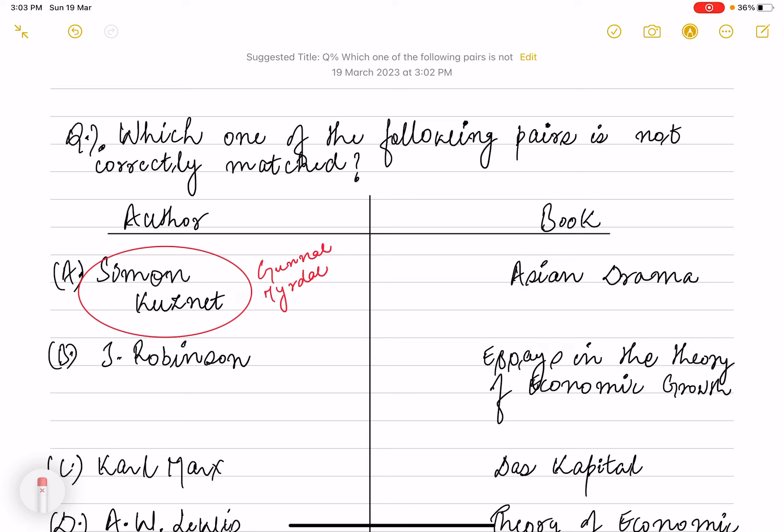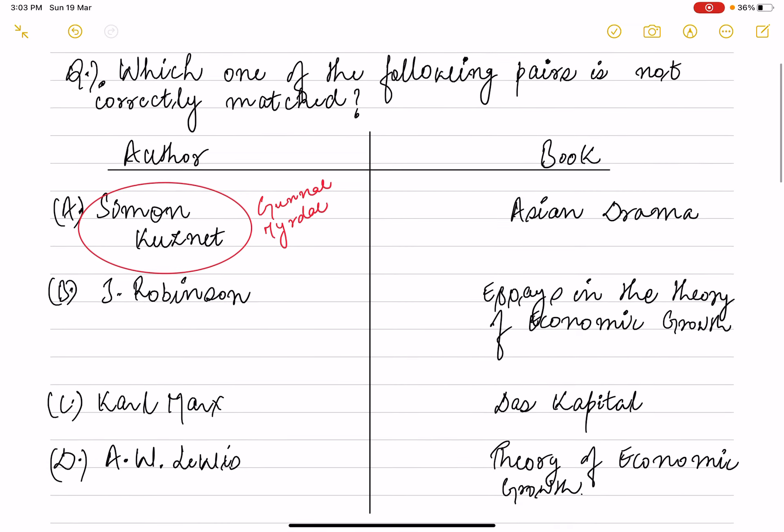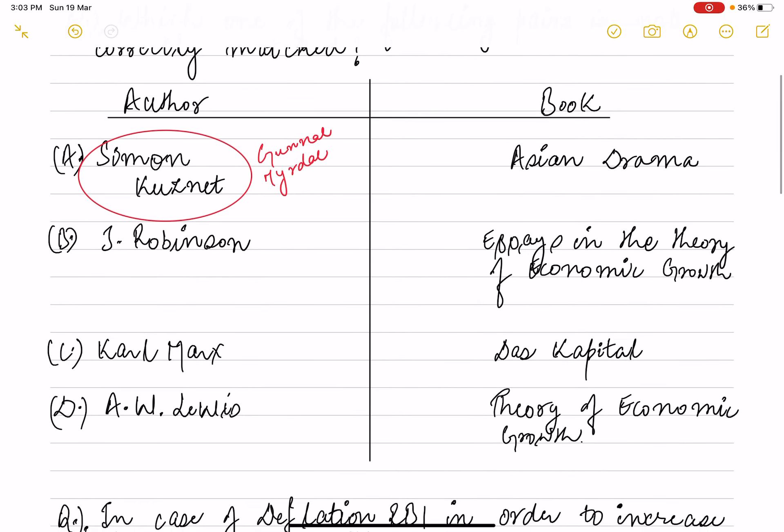Simon Kuznets, his book is not Asian drama. Asian drama was written by Gunnar Myrdal. Robinson's book was the theory of economic growth, Karl Marx wrote Das Kapital, and Lewis's book was theory of economic development. They all match correctly. The first is not correctly matched, so that's the correct answer.